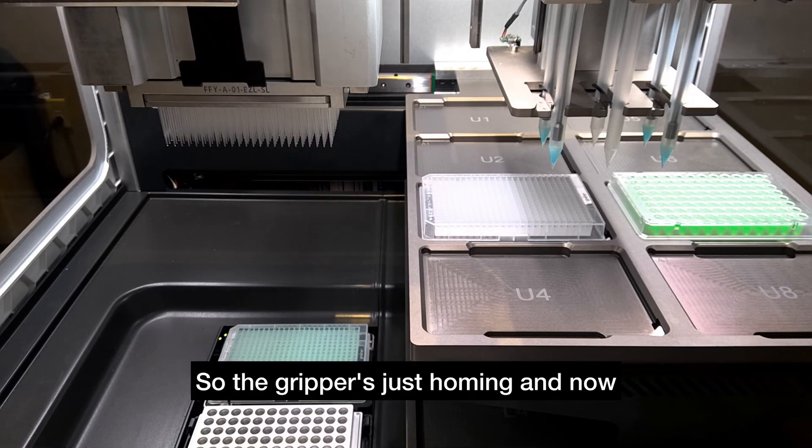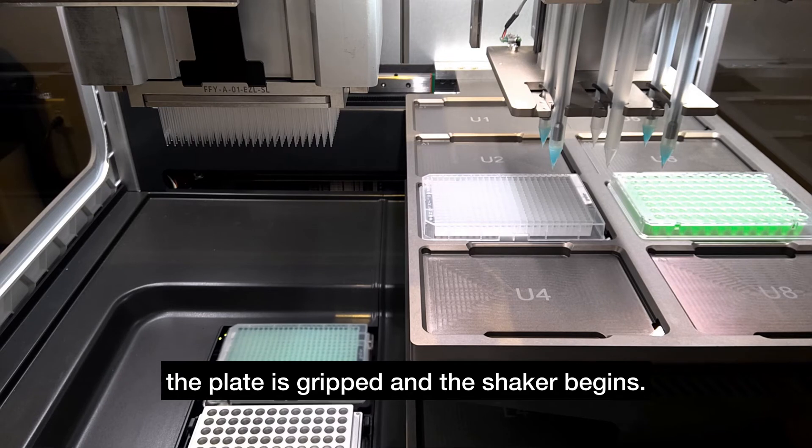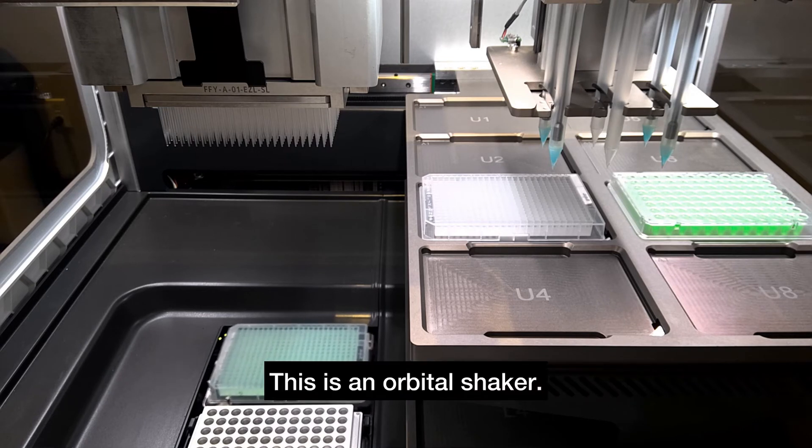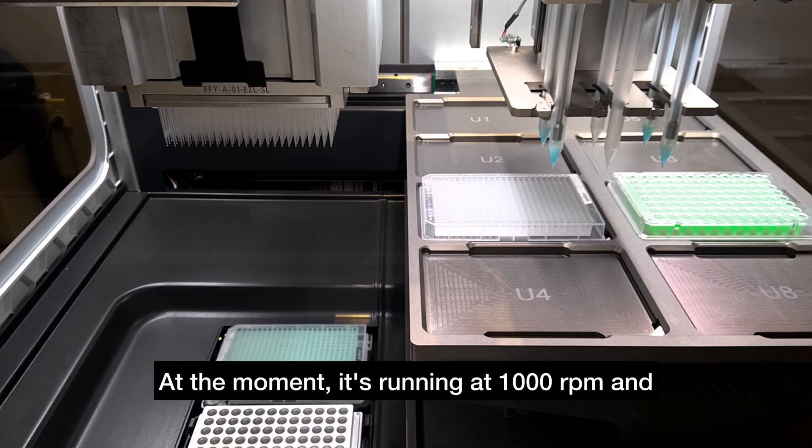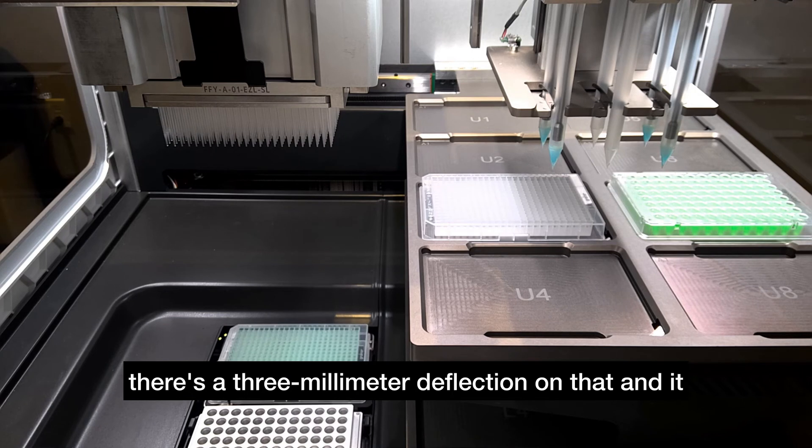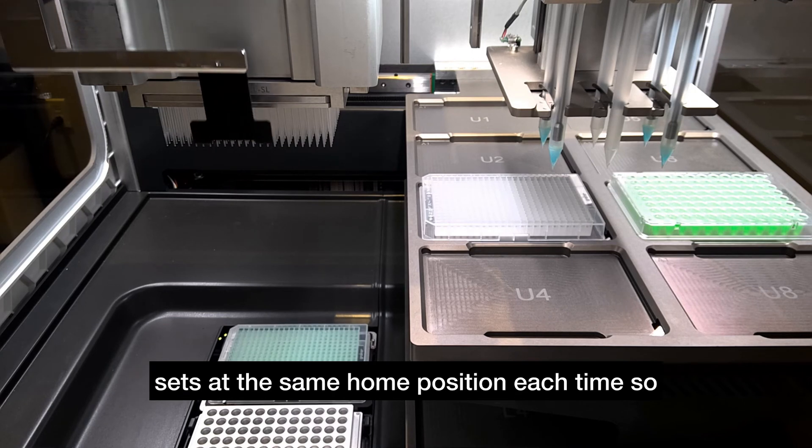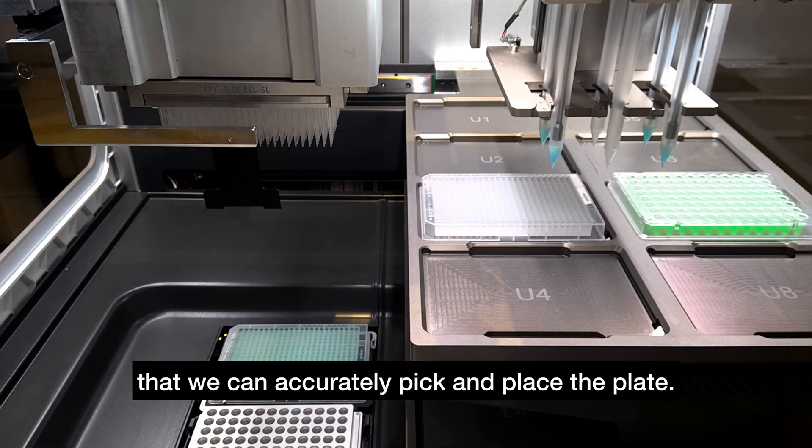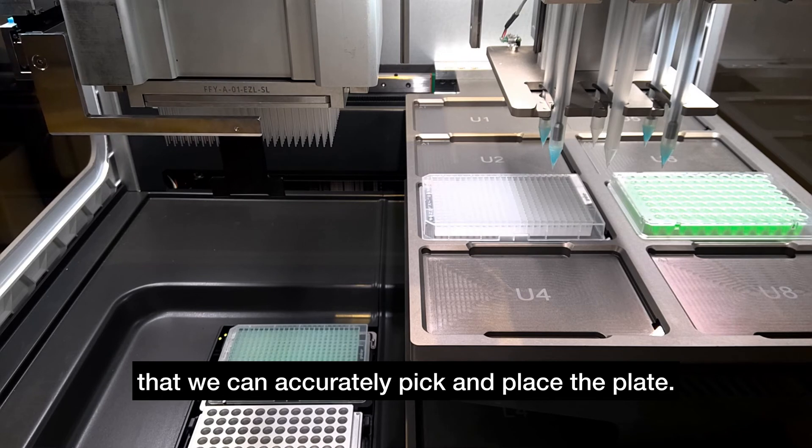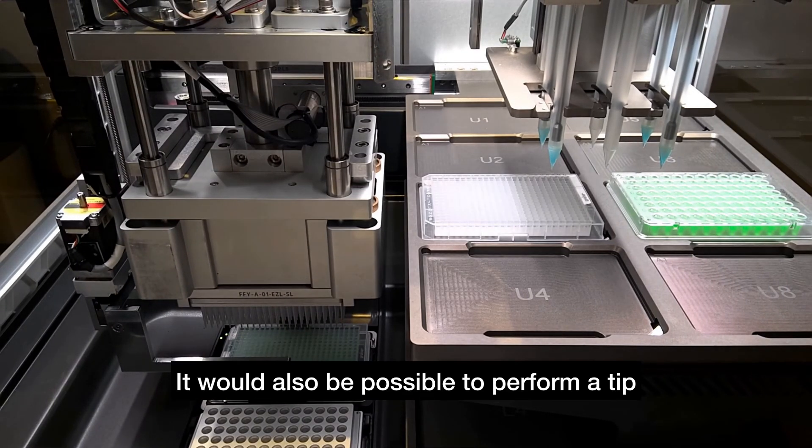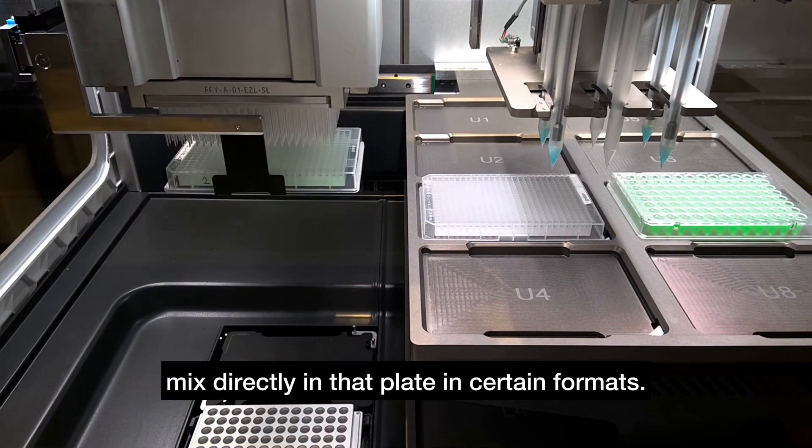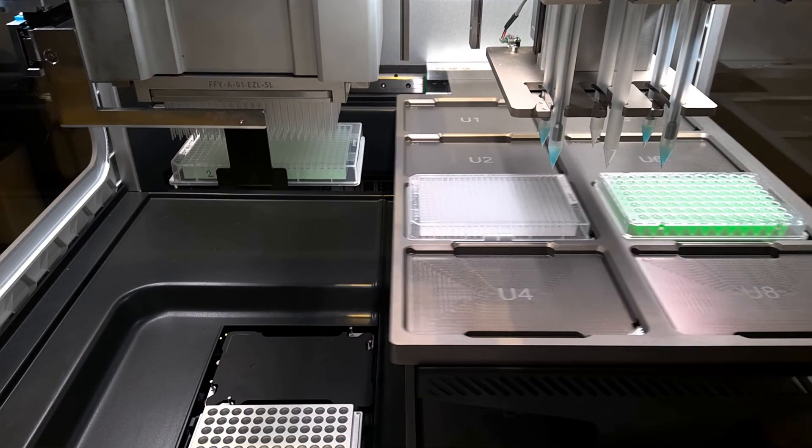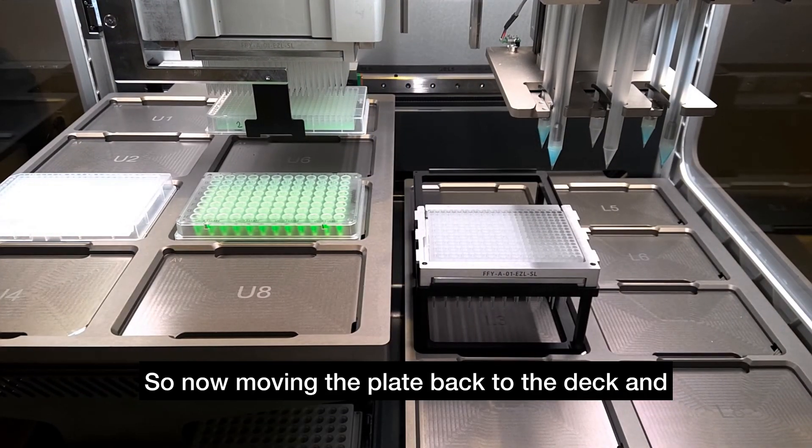The gripper is just homing and now the plate is gripped and the shaker begins. This is an orbital shaker—it can go up to 3000 rpm. At the moment it's running at 1000 rpm with a three millimeter deflection. It sets to the same home position each time so we can accurately pick and place the plate. It would also be possible to perform a tip mix directly in that plate in certain formats. Now moving the plate back to the deck.